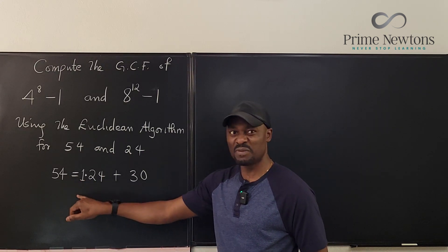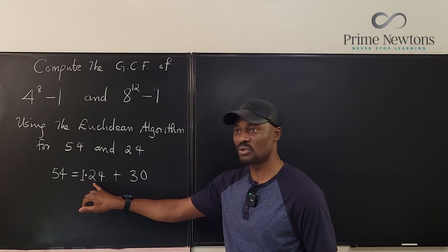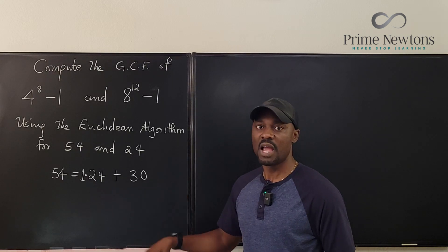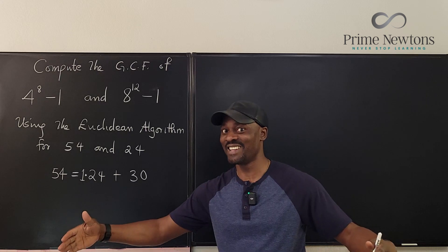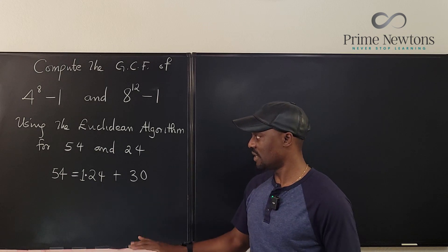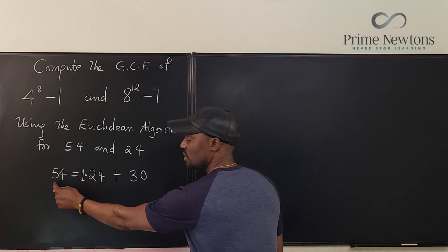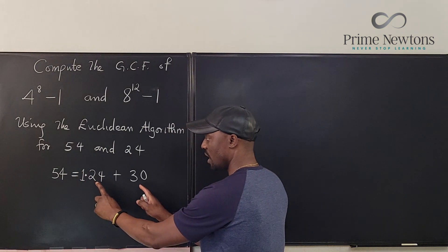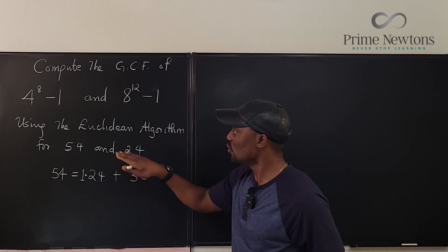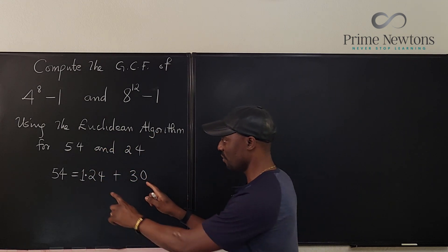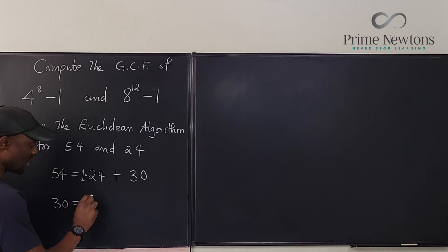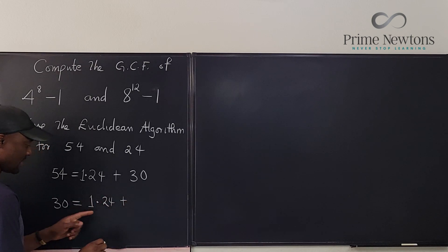The number of times 24 goes into 54 does not matter. I could have said 2 times 24, which is 48, plus 6 — that would have given away the answer too quickly. So I get 1 times 24 plus 30. Now you ignore the quotient and focus on the divisor 24 and the remainder. You treat them as if you're starting the problem again using the Euclidean algorithm for 24 and 30. Because 30 is the bigger number, 30 equals 1 times 24 plus 6.